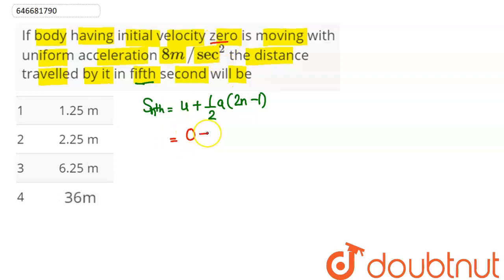plus half, the acceleration in the question is given as 8 meter per second square, into 2 times n, where n here is 5, minus 1.